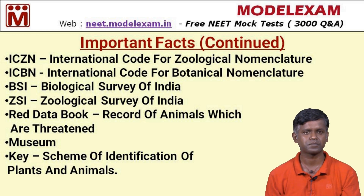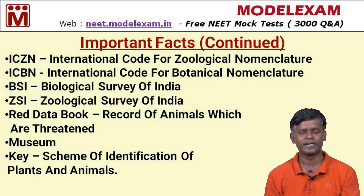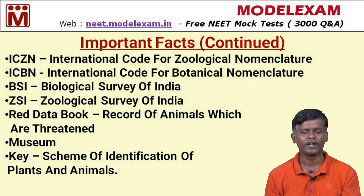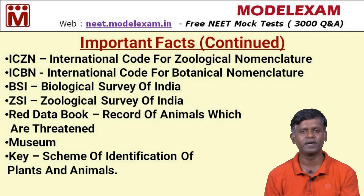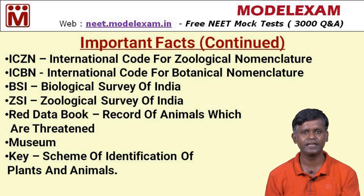The Red Data Book is a record of threatened or endangered animals. Museums, national sanctuaries, and national parks are all built to preserve animal and plant species in a wide environment. A 'key' is a scheme used for the identification of plants and animals, maintained to regulate the preservation of species.